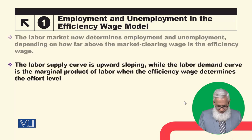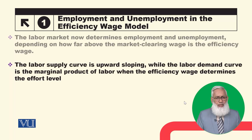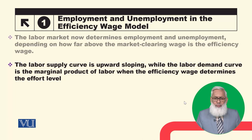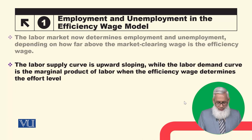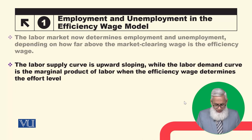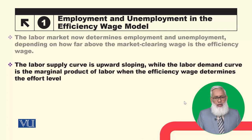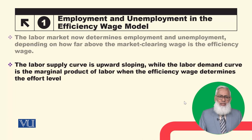The labor supply curve is usually positively sloped, upward sloping, while the labor demand curve is the marginal product of labor when the efficiency wage determines the effort level. In the classical model, the labor demand curve is driven by the marginal product of labor.